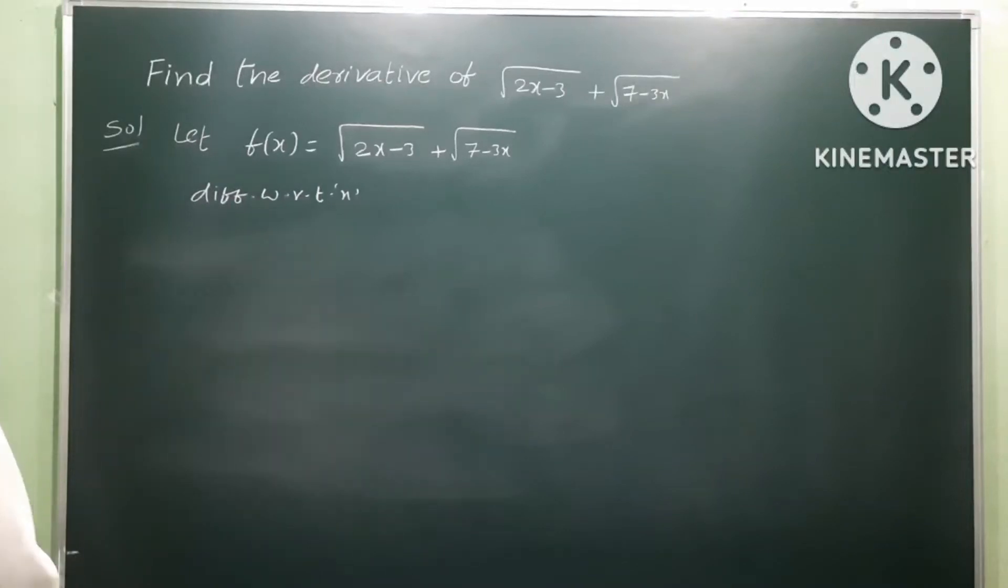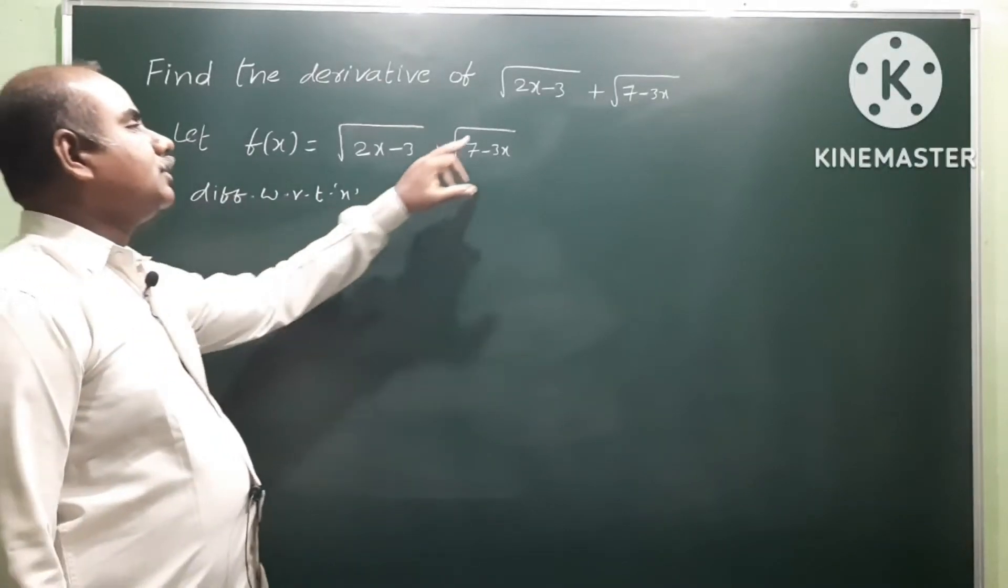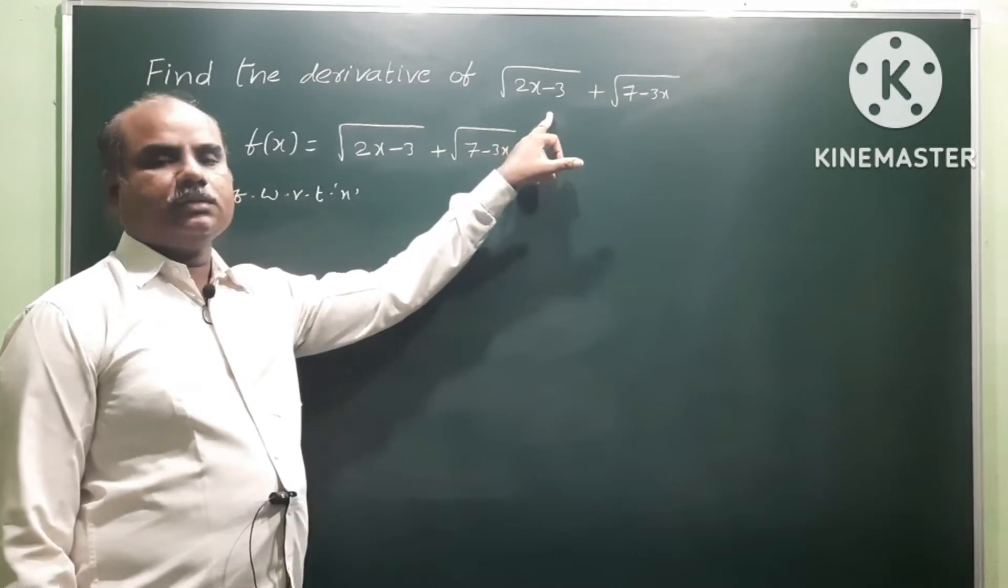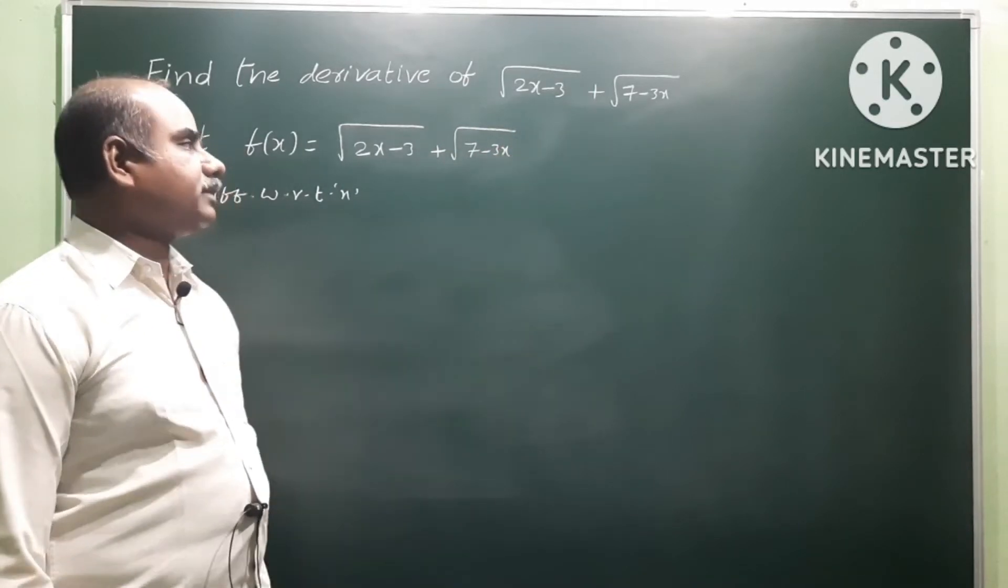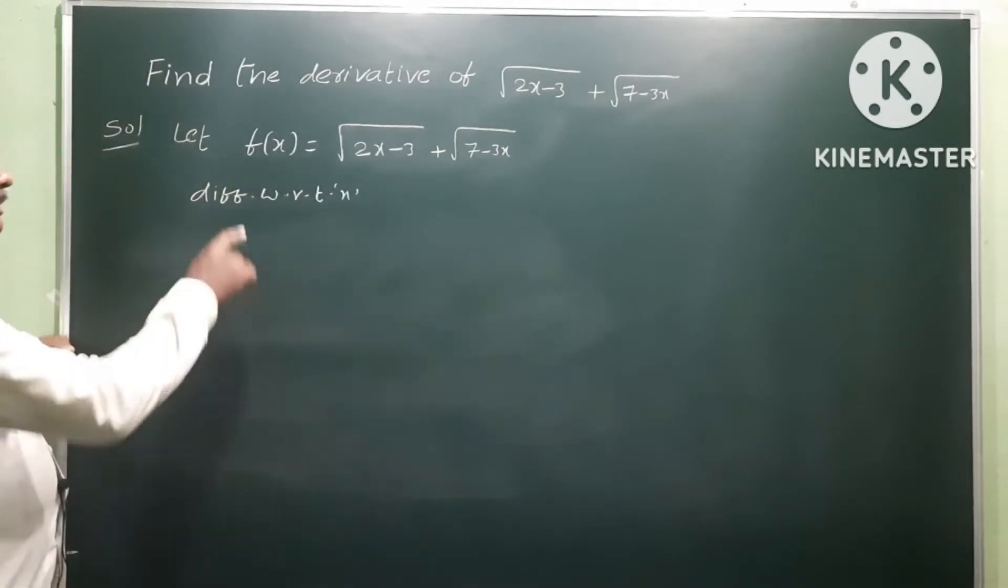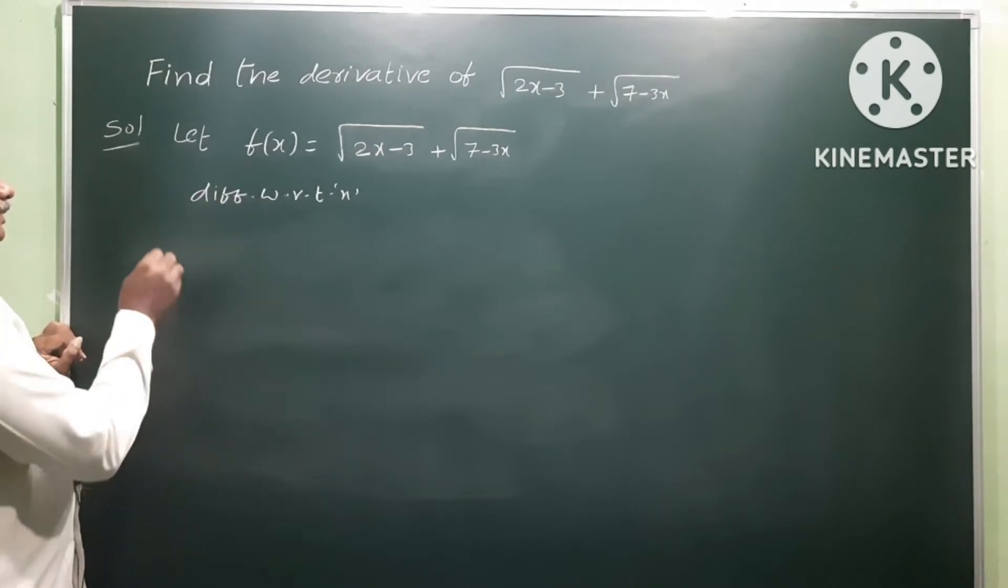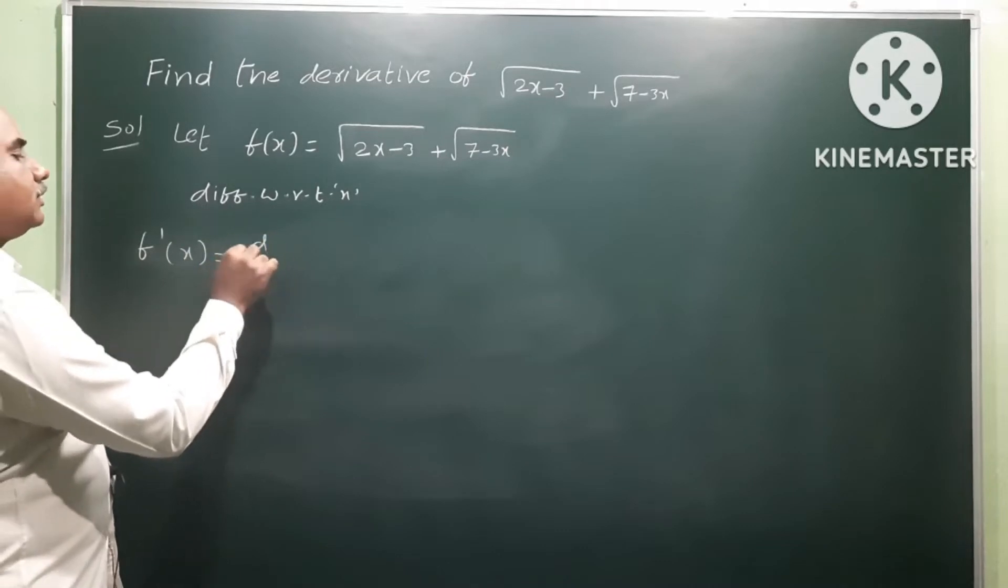Okay, next problem: find the derivative of the square root of 2x minus 3 plus the square root of 7 minus 3x. So for this function f(x), differentiate with respect to x. The derivative f'(x) equals d/dx of...